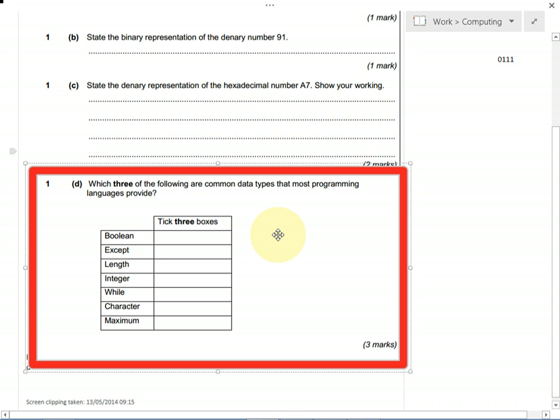So let's go through them all in order. Boolean means that something's either true or false, so we can have that in Python, we can have that whenever we're programming.